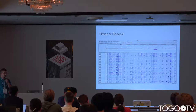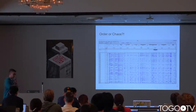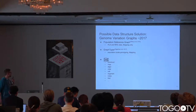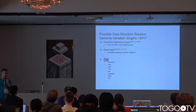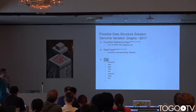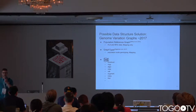One solution here would be to take all the variant data together, combine it into one single data structure, for example, a genome variation graph. Two years ago, there weren't many data structures around. There was a population reference graph, a graph type, and of course, most prominently, VG, which was able to perform a lot of different tasks.